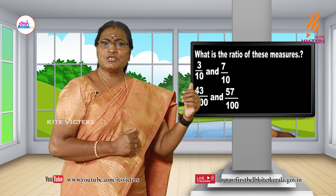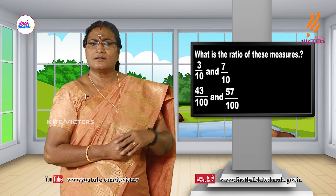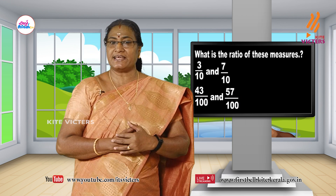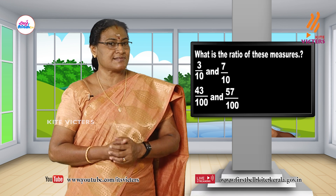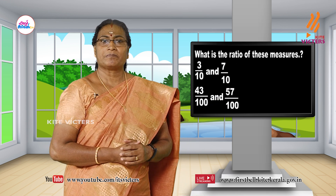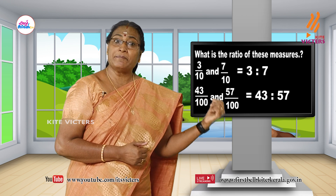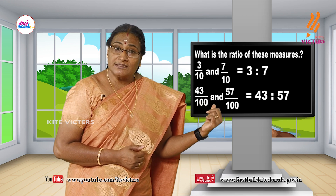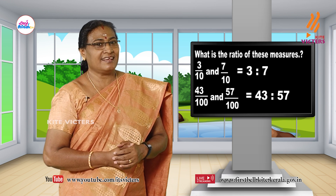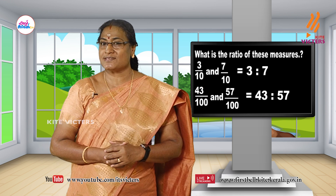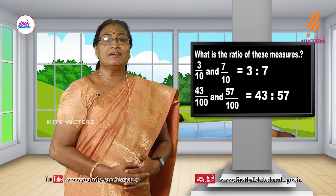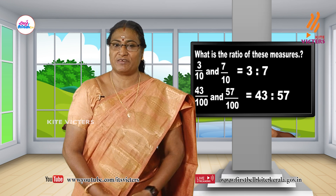What is the ratio of these measures? Look: 3/10 and 7/10 — denominators are same, so the ratio is 3 is to 7. And what about 43/100 and 57/100? Again, in each of these cases the denominators are same, so you can write 43 is to 57.